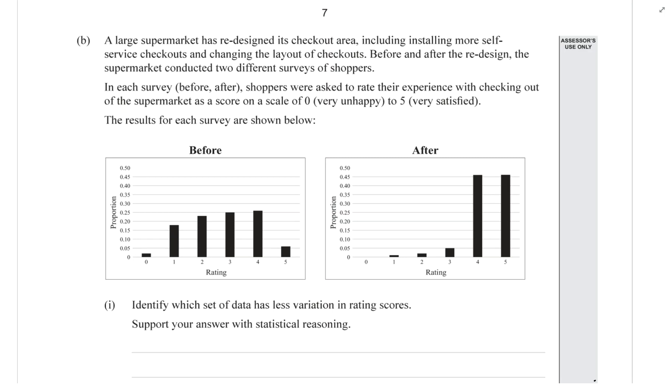This is the final video in the 2016 probability distribution exam, and this is question 3b. Pause the video and have a read of the question, then have a good look at the graphs, think about what they're saying, and hit play once you've done that. The main points are we've got two surveys done at the supermarket - one is before the supermarket's been redesigned and the other is after. We've been asked in question (i) to identify which set of data has less variation in rating scores.